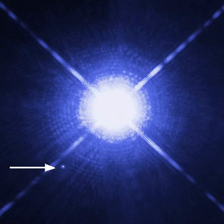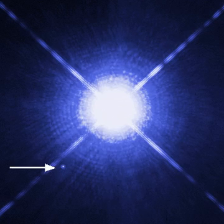A white dwarf is very hot when it forms, but because it has no source of energy, it will gradually radiate its energy and cool. Its radiation, which initially has a high color temperature, will lessen and redden with time. Over a very long time, a white dwarf will cool and its material will begin to crystallize, starting with the core. The star's low temperature means it will no longer emit significant heat or light, and it will become a cold black dwarf.